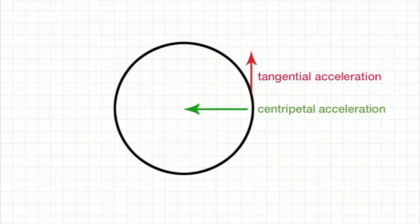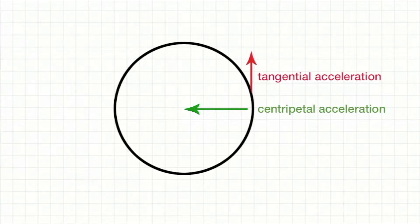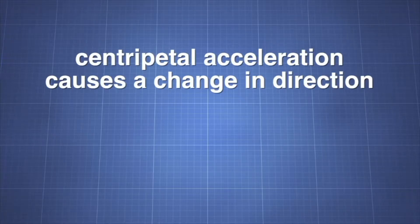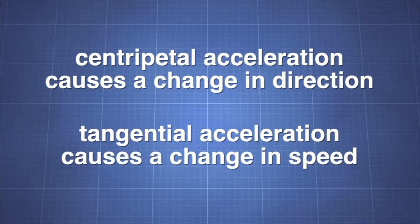Circular motion is the result of two balanced forces. Centripetal acceleration draws the object toward the center. This is balanced by tangential acceleration, which causes the object to move in a straight line tangent to the circle. The two acceleration vectors are perpendicular to one another. Centripetal acceleration causes a change in direction, while tangential acceleration causes a change in speed.